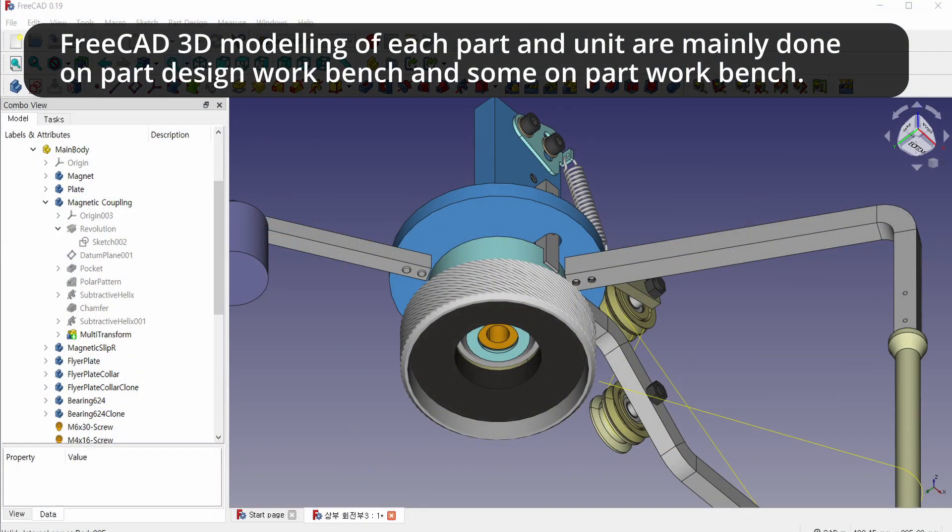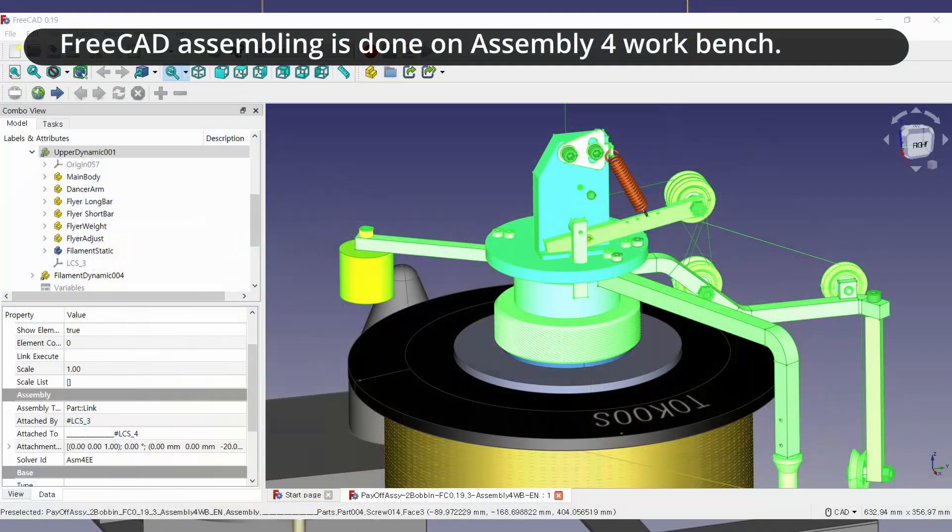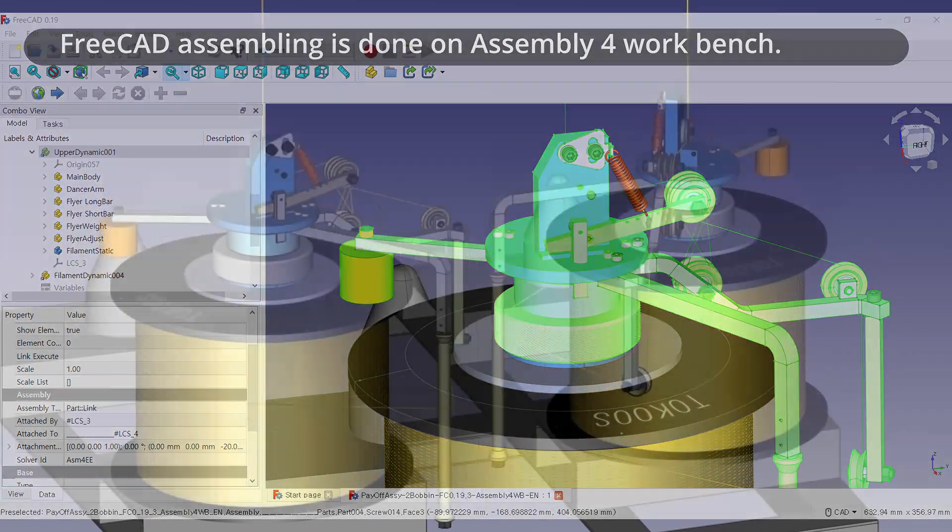FreeCAD 3D modeling of each part and unit are mainly done on part design workbench and some on part workbench. FreeCAD assembling is done on assembly for workbench.